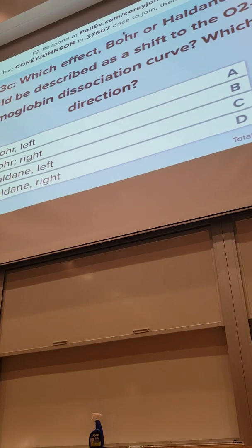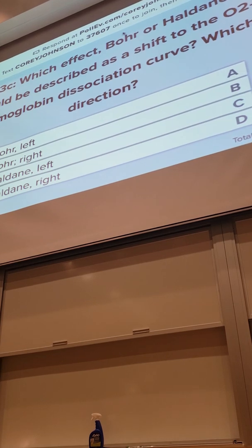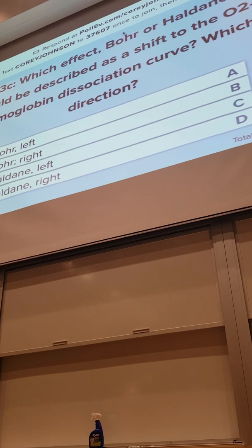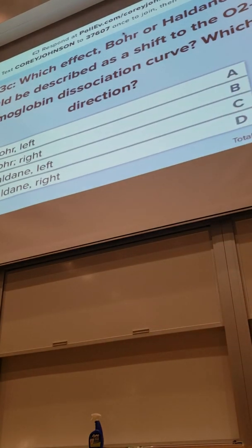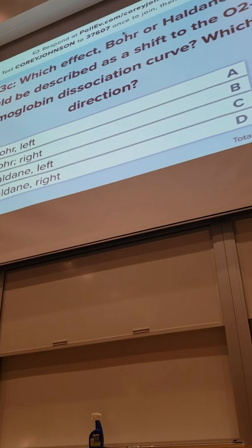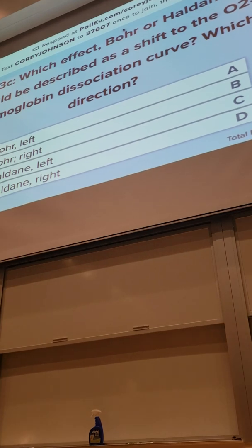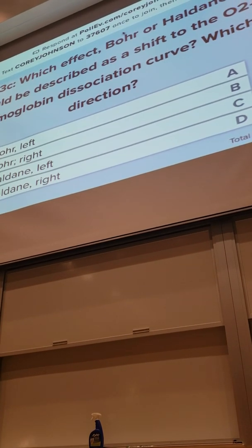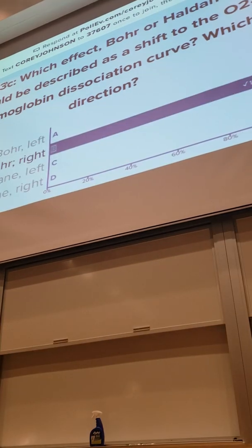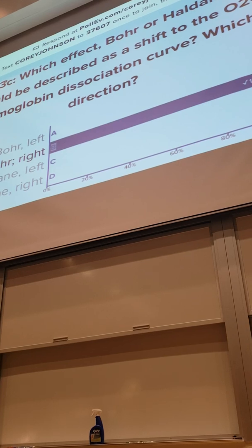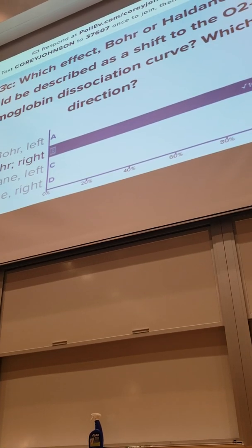Easy question. If you're awake. If you're not awake, talk to somebody close to you. Say, hey, what do you think? Which effect, Bohr effect or Haldane effect? Could be described as a shift to the oxygen hemoglobin dissociation curve. And in which direction? And you're looking back at your slides, that's cheating. You can do it. If you have to. If you could ask them something a different way. Which of these effects?